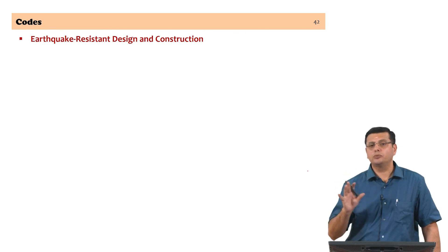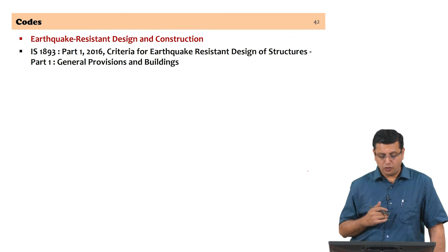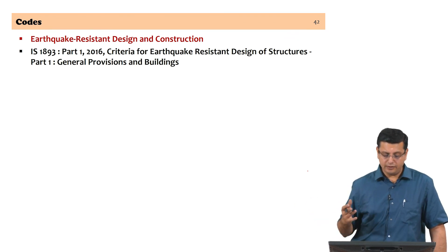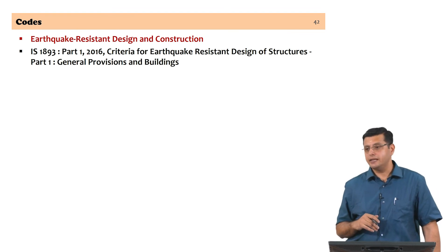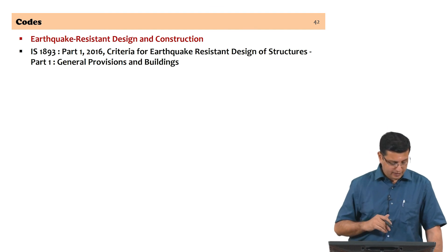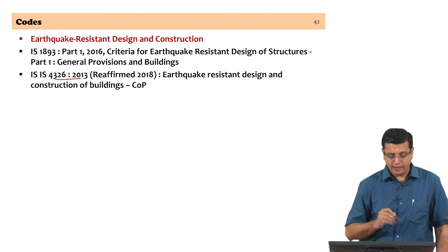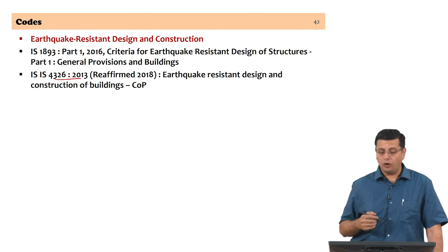The third category covers earthquake resistant design and construction codes for masonry. IS 1893 Part 1 (2016) defines loads and general provisions for seismic design of structures. For actual design and construction details, IS 4326 (version 2013/2000) provides specific details for executing earthquake-resistant masonry constructions. With that, the introductory part on structural masonry in ancient and modern times and the codal framework concludes.